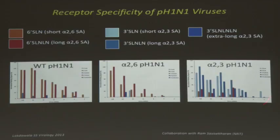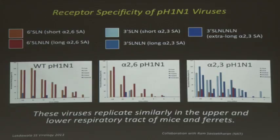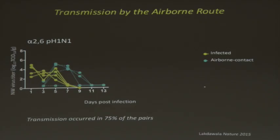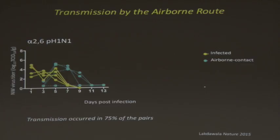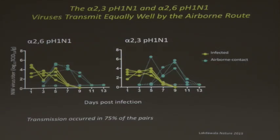We infected ferrets with these viruses and found they replicated similarly. For the two-six H1N1 virus — our positive control — all four experimentally infected animals became infected, and in three out of four pairs there was transmission, as expected. Then we infected animals with the two-three-linked sialic acid binder. The prediction was it would not transmit. Unfortunately, it did transmit — and transmitted just as well. This was a surprise.